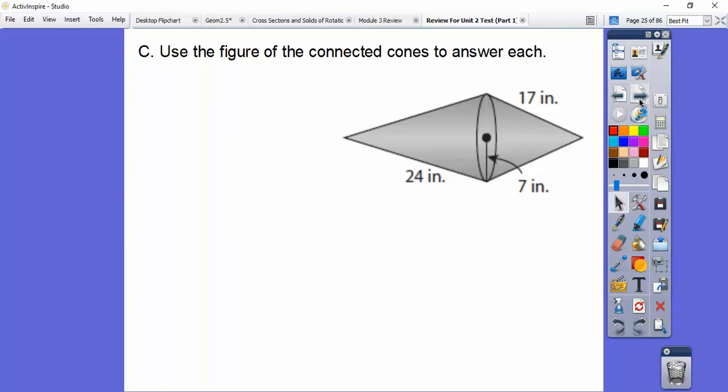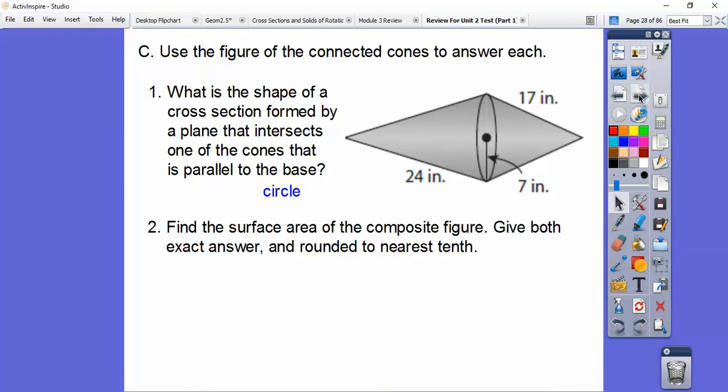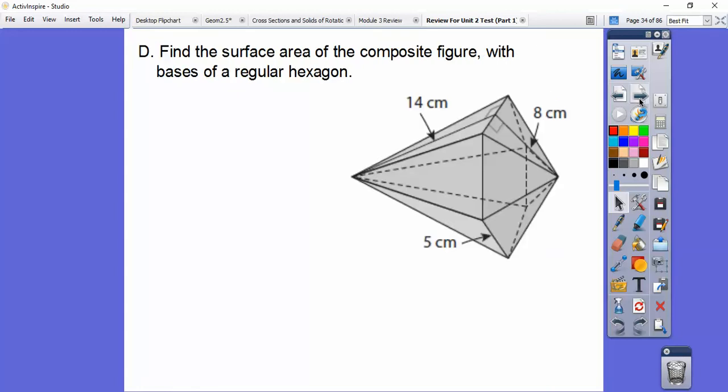This figure shows connected cones. What is the shape of the cross section formed by a plane that intersects one of the cones and is parallel to the base? It's going to be a circle. If I could slice it right there, it's going to make another circle going right through there. Find the surface area of the composite figure and give both the exact answer and rounded to the nearest tenth. Surface area is lateral area plus lateral area, so pi rl plus pi rl. We get 287 pi inches squared, which is close to 901.6 inches squared.